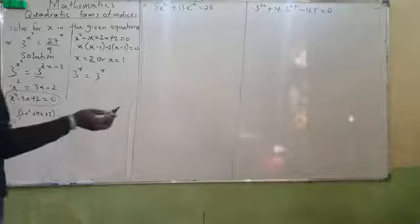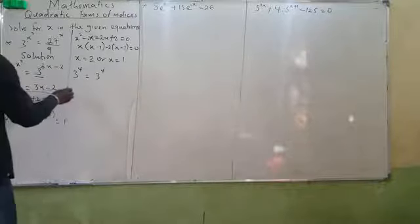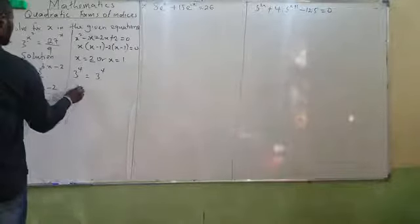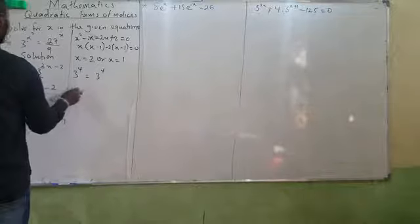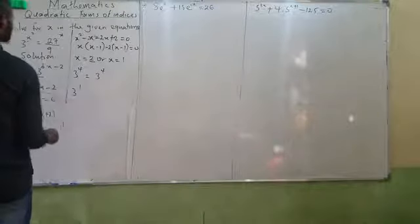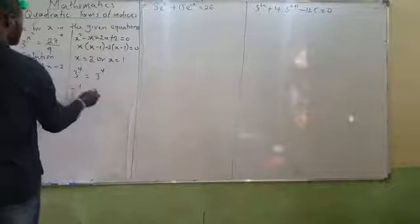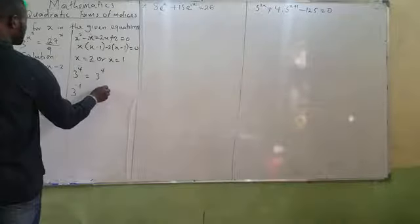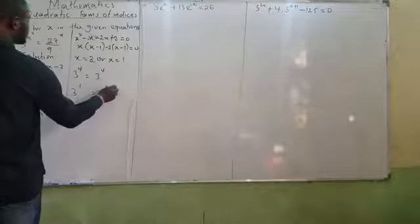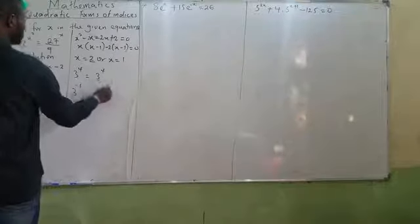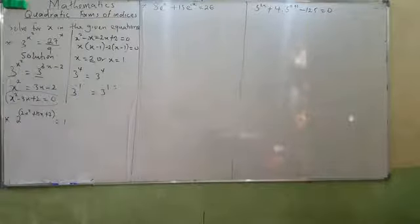It's very, very correct. Now if I use the other solution, x equals 1: 1² equals 1, so 3 raised to the power 1. And 3(1) minus 2 equals 1, so 3 raised to the power 1 equals 3 raised to the power 1. It's very correct.